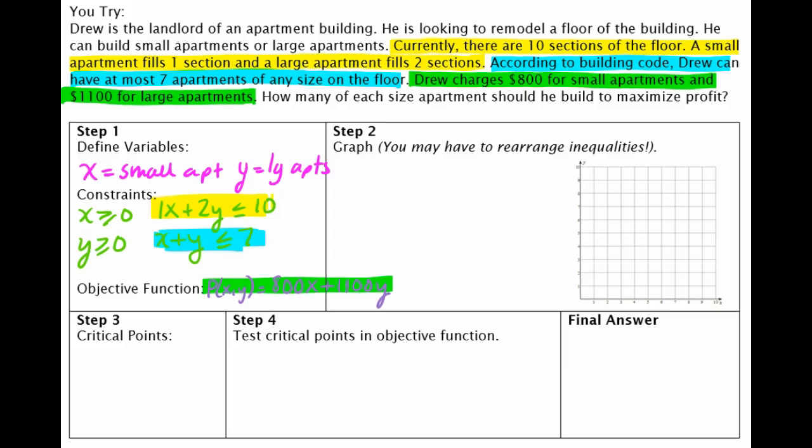So we're going to have to do some rearranging here. So this equation here, or this inequality, I'm going to rewrite it. x plus 2y is less than or equal to 10. I need to get y by itself so that it's in slope intercept form. So I'm going to subtract x from both sides. And I have 2y less than or equal to negative x plus 10. And then I'm going to divide everything by 2.